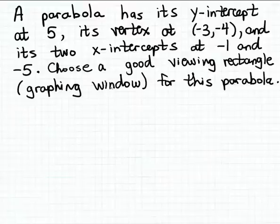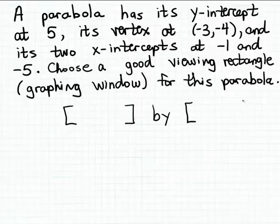Remember, a viewing rectangle is also sometimes referred to as a graphing window, and a graphing window consists of two parts. Those parts are the x-window—the portion of the x-axis that we're going to include in our graph—and then a y-window—the portion of the y-axis we're going to include in the graph.